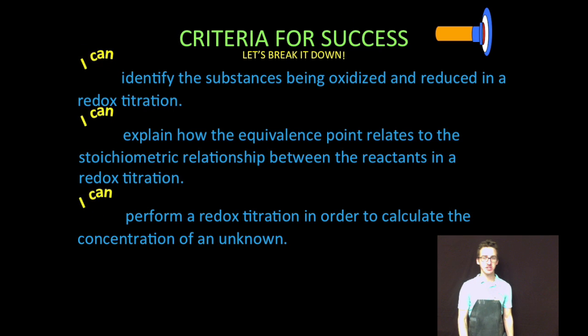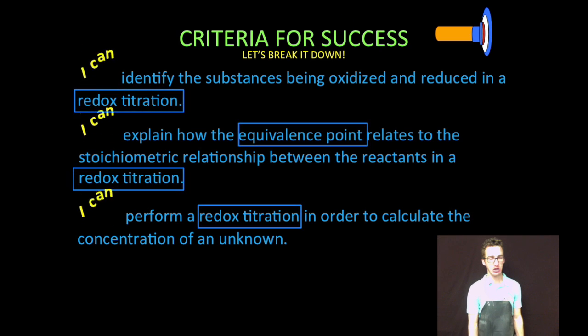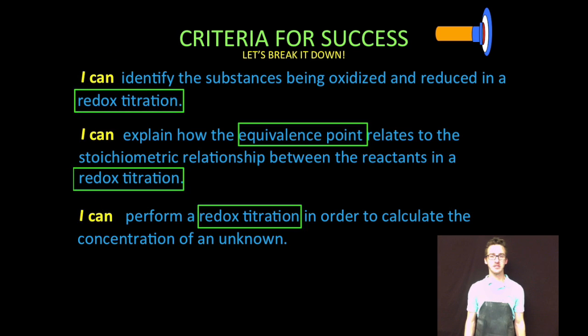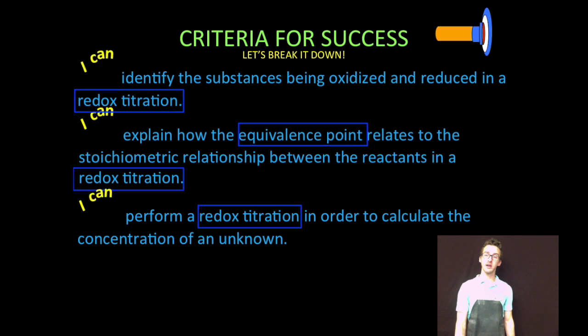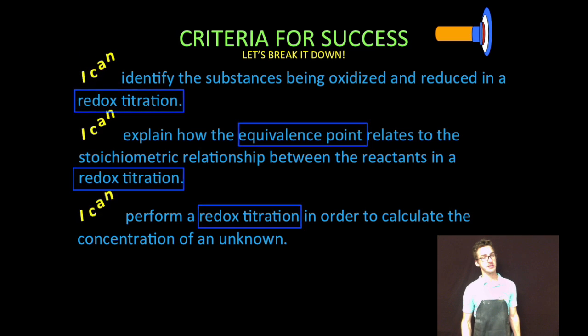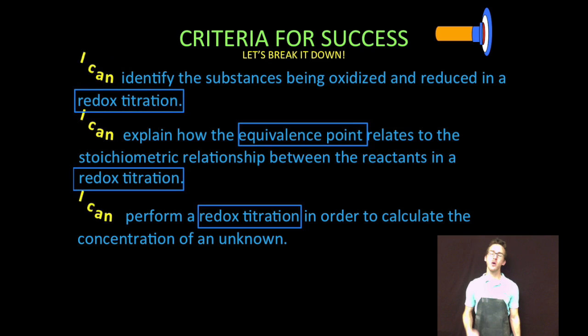Alright, I know titrations are everyone's favorite thing to do. Let's break it down a little bit. You want to be able to, number one, identify the substances being oxidized and reduced in a redox titration. Number two, explain how the equivalence point relates to the stoichiometric relationship between the reactants in a redox titration. And number three, perform a redox titration in order to calculate the concentration of an unknown.